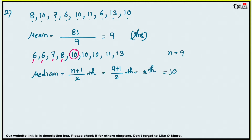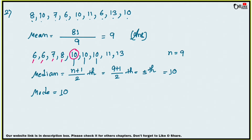Counting to the 5th term: 1st, 2nd, 3rd, 4th, 5th — that is 10. So median = 10. For the mode, 10 occurs three times, which is the maximum, so mode = 10.